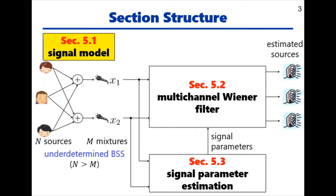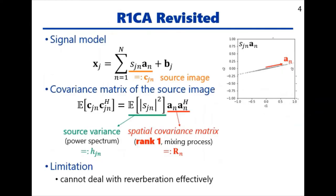Now we describe the signal model. Before describing the signal model in FCA, let us revisit that in R1CA. In R1CA, the signal model is given as shown here. Here, each term in the summation is a source image, or the contribution of a source signal to the mixtures. As shown in the figure, the source image lies on a line parallel to the mixing vector.